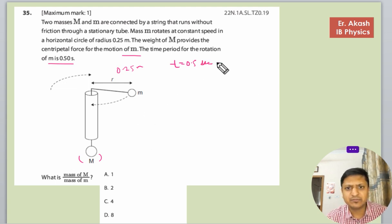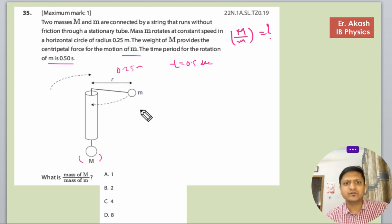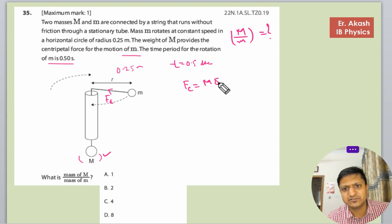Time period for rotation is given as T equals 0.5 seconds. So what is M by m ratio? We have to calculate capital M by small m ratio. In this question, the centripetal force Fc equals Mg. The weight of M provides the centripetal force.